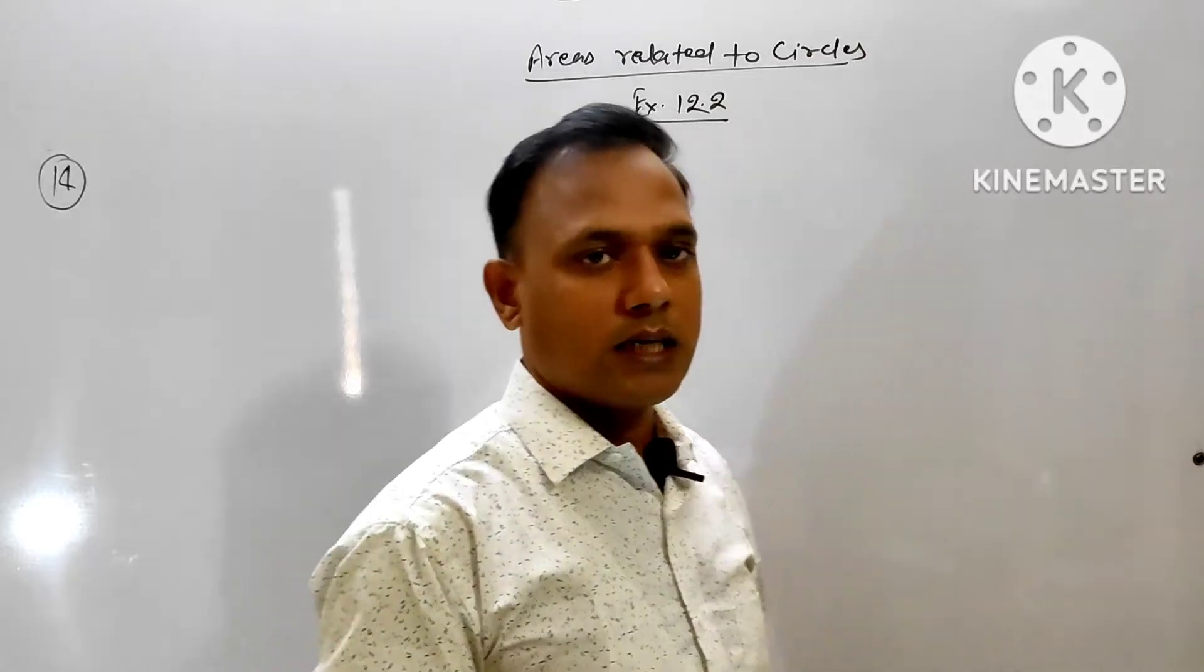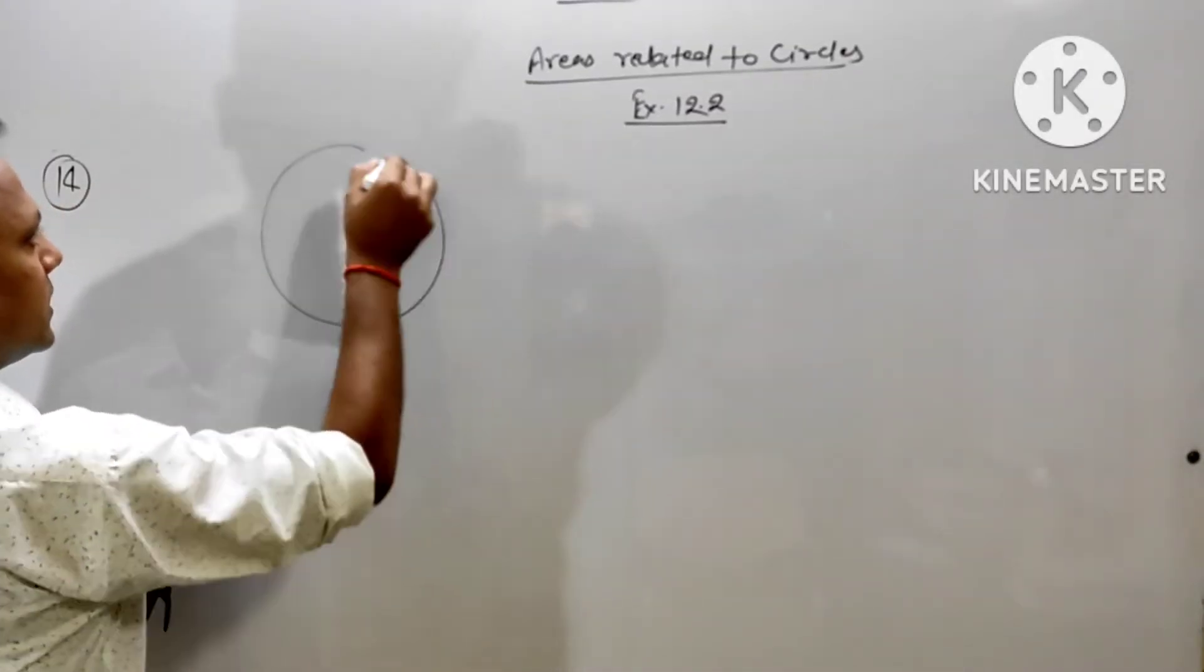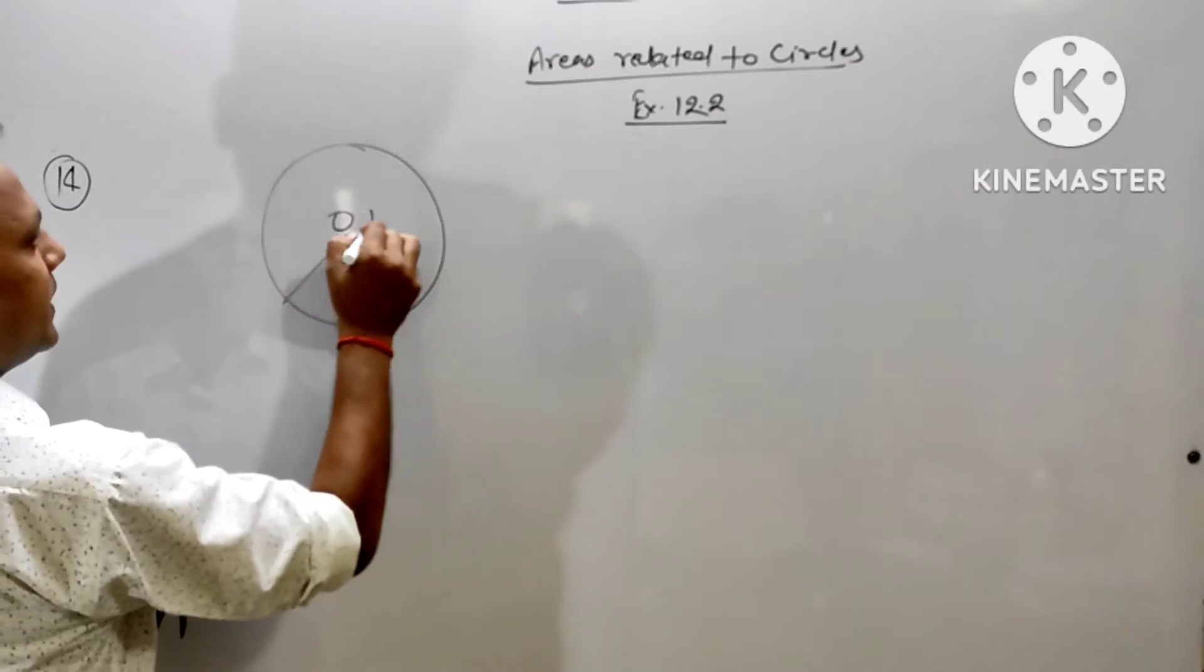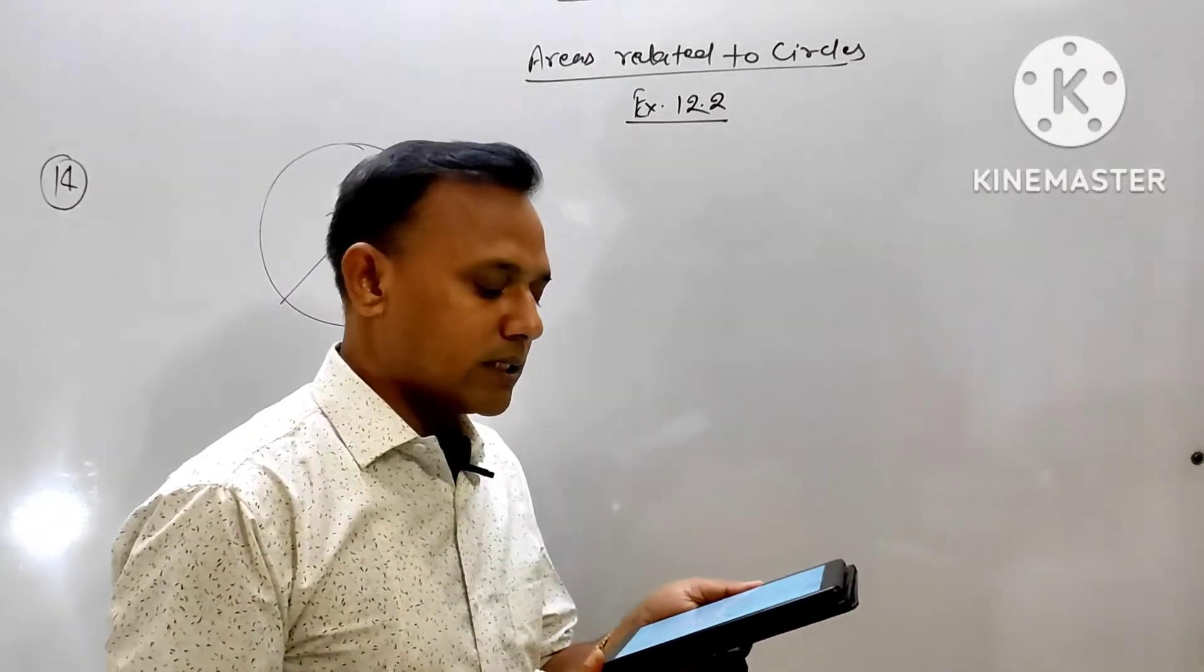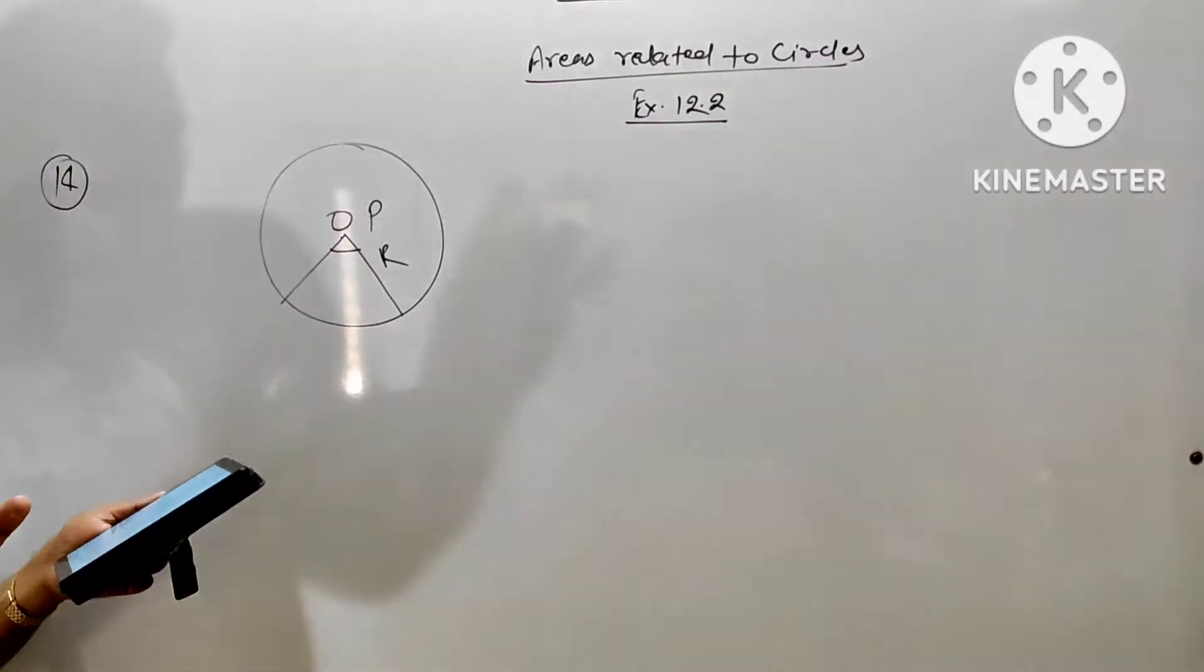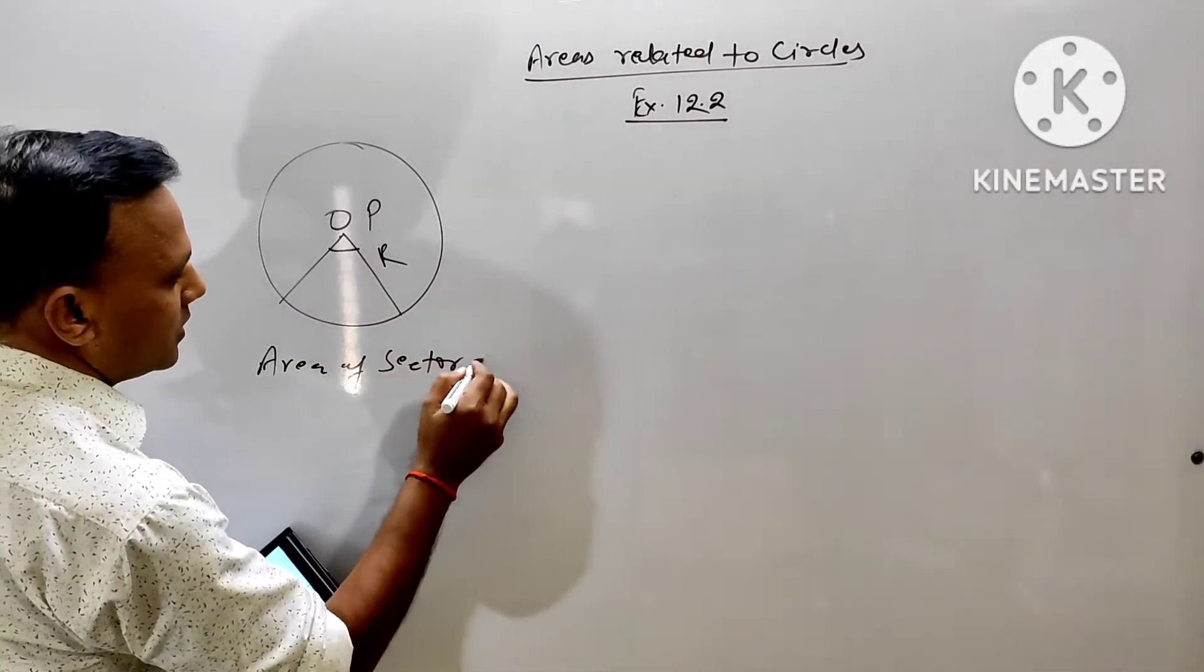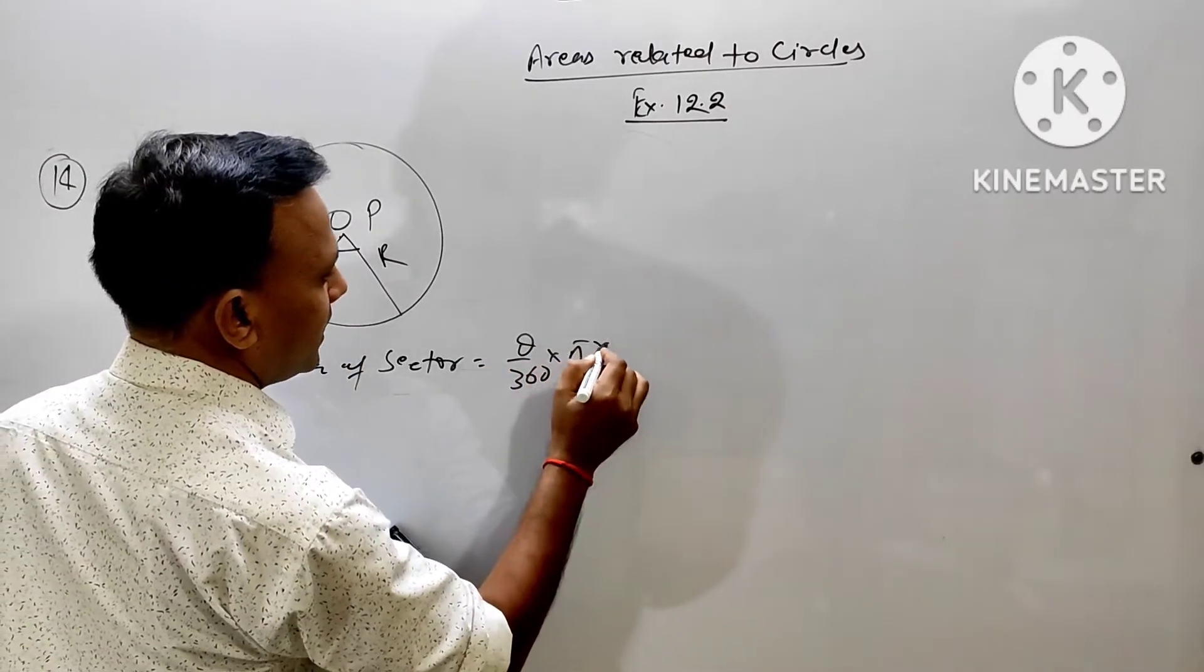Each circle is given with radius R and this is the center of angle P. The angle P forms the area of sector. What would it be? You know that area of sector is equal to theta upon 360 times pi r square.